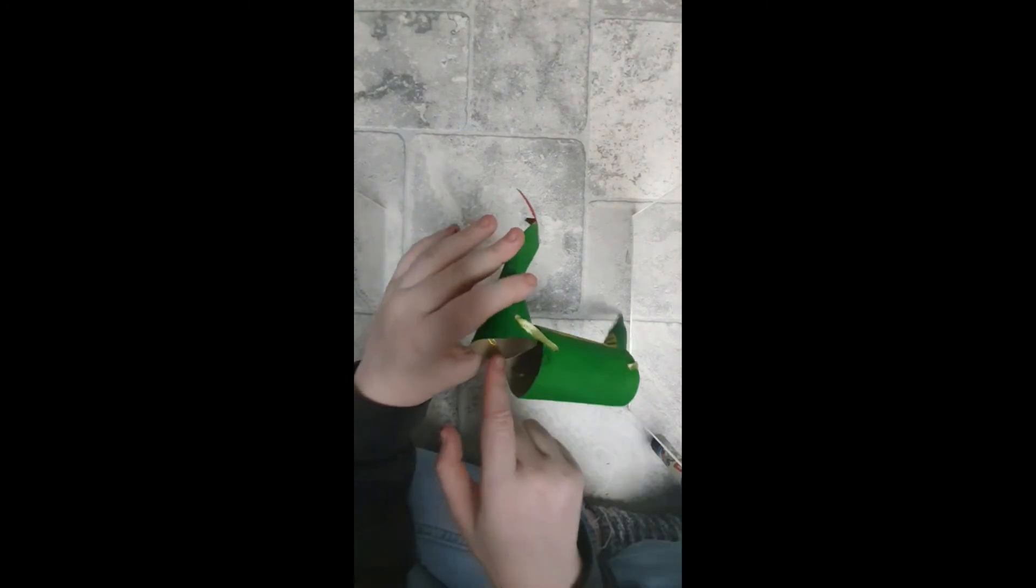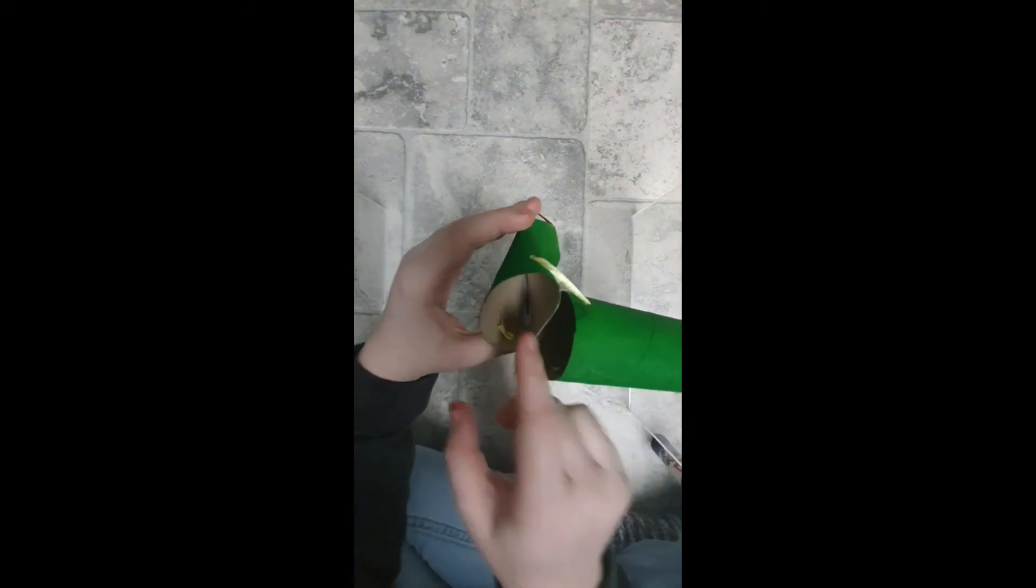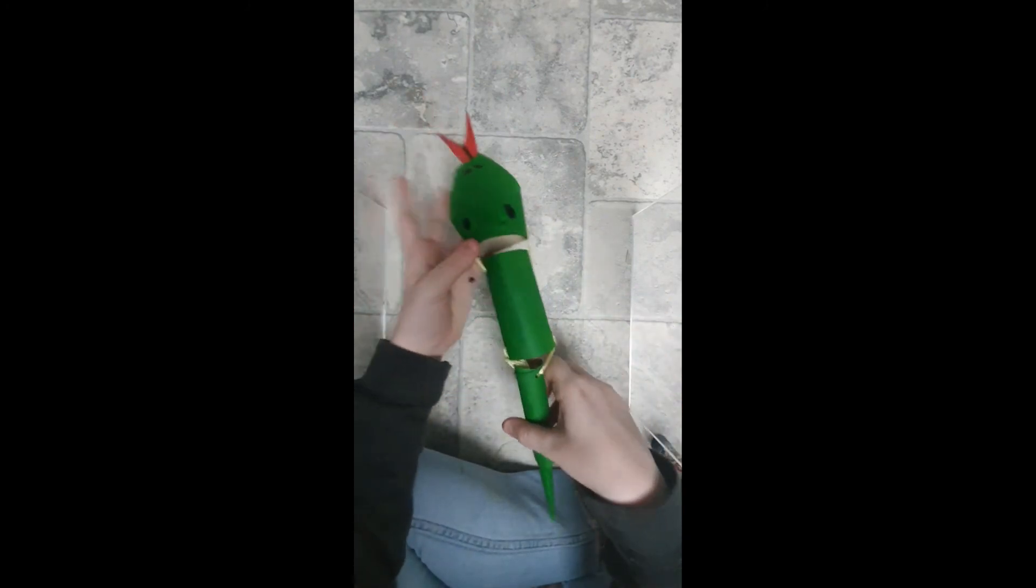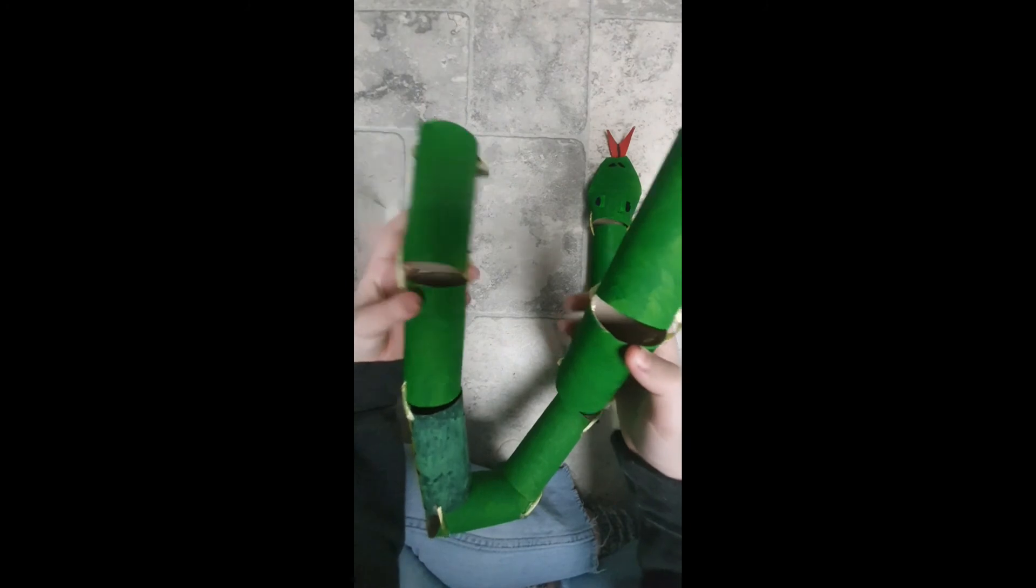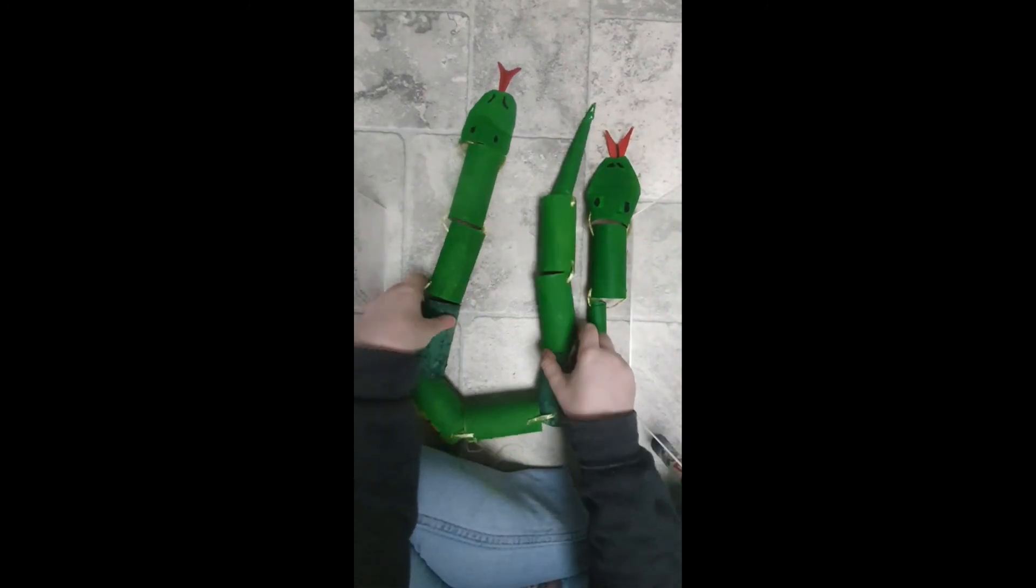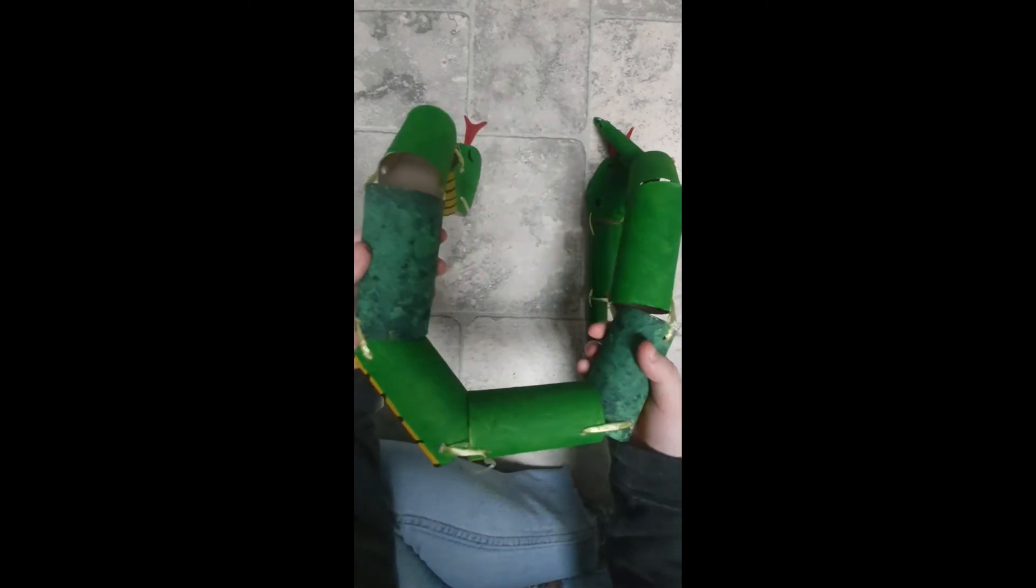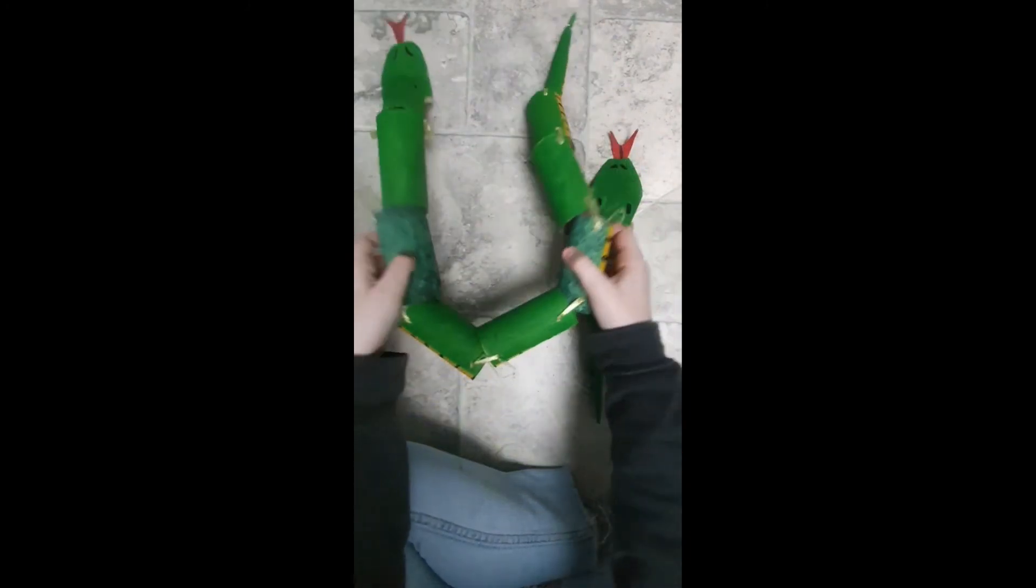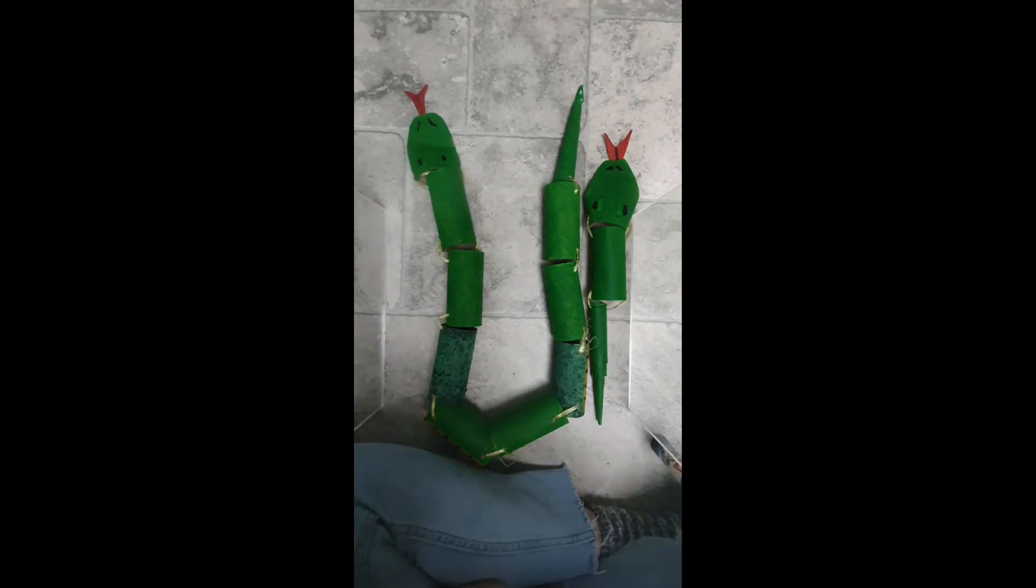So there you have it. As you can see, I've tied the strings off on the insides of both the tail and the head. Now you don't have to just have a short snake. You can have a snake like this one made by Bailey, which is many tubes, and you can have it different colors, different textures. But yeah, that's it.